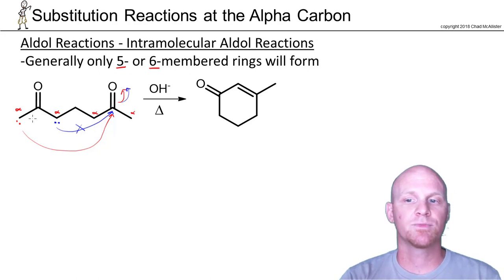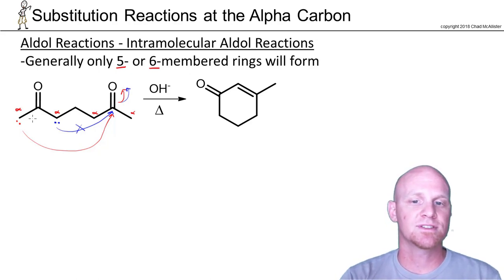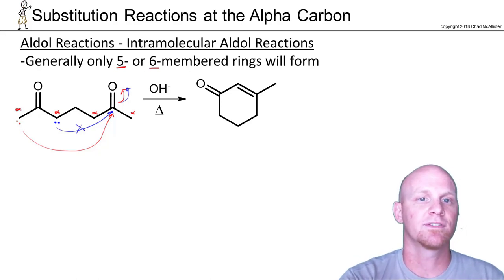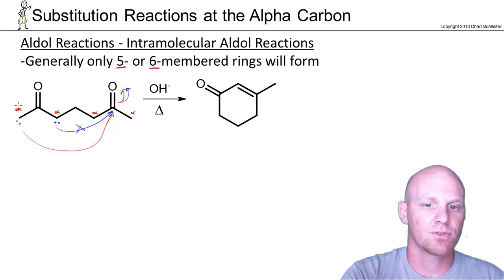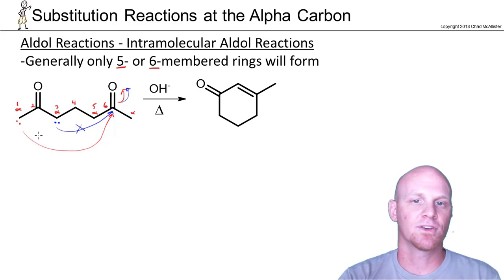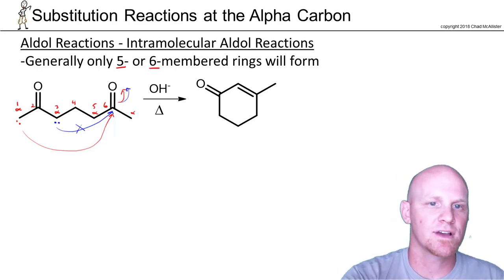Those would be exactly the analogous reactions. So out of the two possible intramolecular reactions, only one of them actually forms a five or six-membered ring, and that's the only one we'll consider here. I'll go through and number the chain: one, two, three, four, five, and six, so I can predict what the product is going to look like.